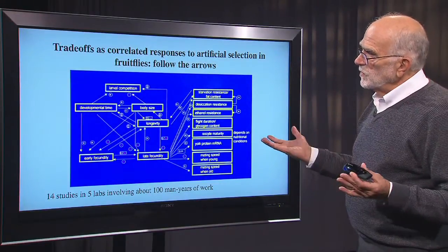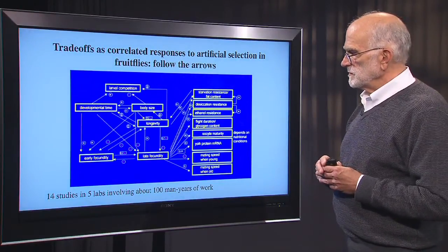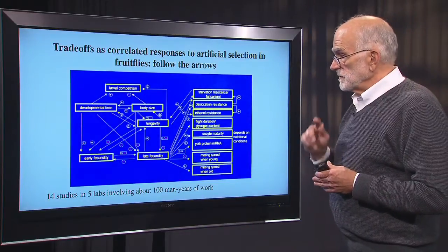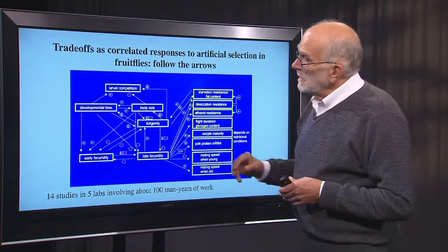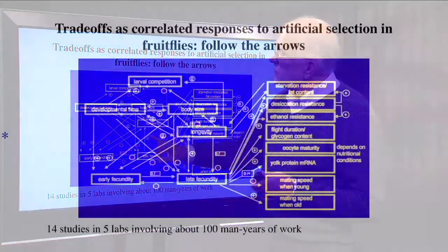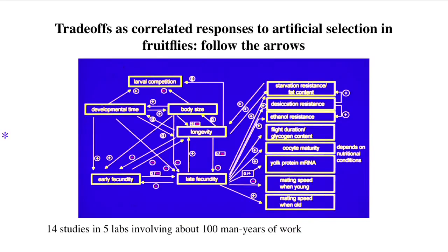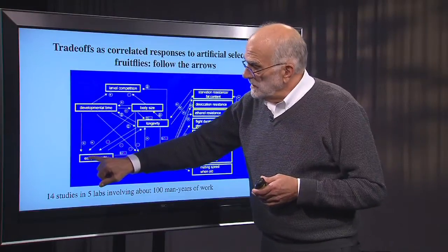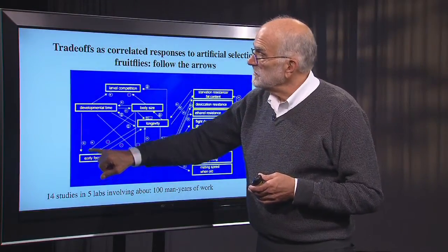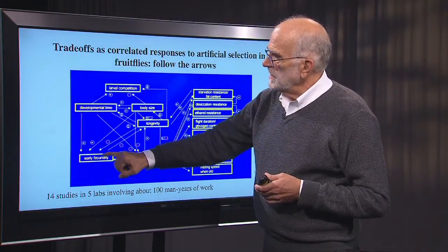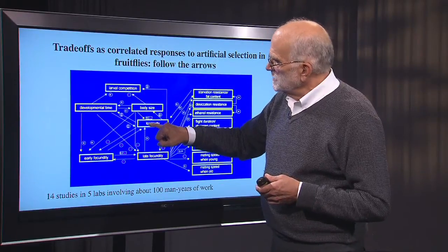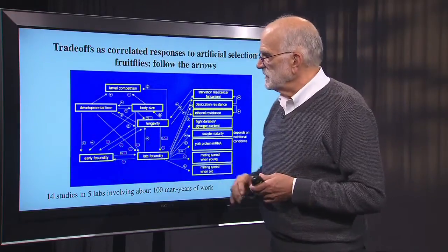Here is an example of what an organism looks like that's been dissected this way. These are experiments on fruit flies expressing correlated responses — a summary of 14 studies done in 5 labs, probably more than 100 man-years of work. Every arrow in this diagram connects two traits, such as body size and early fecundity. The arrow starts at the selected trait and ends at the trait whose correlated response was measured. Flies selected to be larger had greater early fecundity; flies selected for longer development had greater early fecundity; flies selected for higher early fecundity — with a negative sign — had shorter lifetimes; and flies selected to live longer had lower early fecundity.